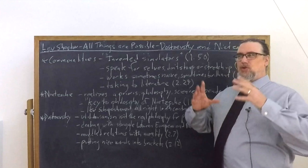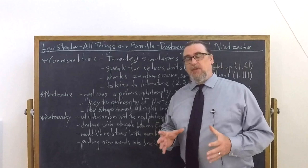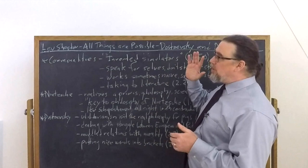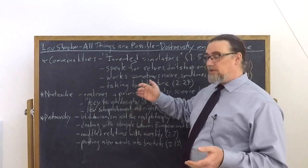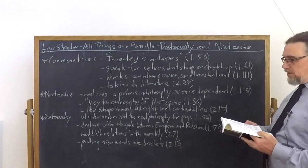So what we can do in thinking about the importance of Nietzsche and Dostoevsky is look at the passages where they're being brought up together and then look at the things that Shestov has to say about them individually. And as it turns out, there are quite a few places where they are being discussed together. So one of these is in chapter 50, where he calls them inverted simulators.